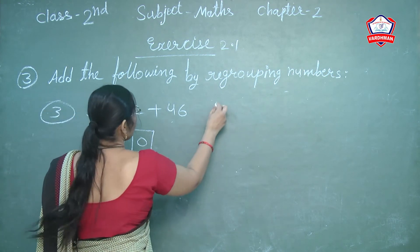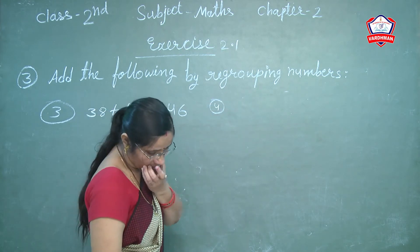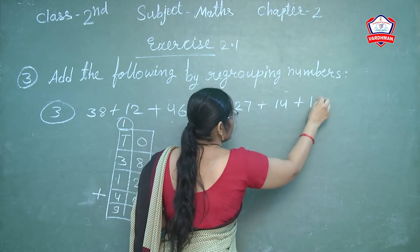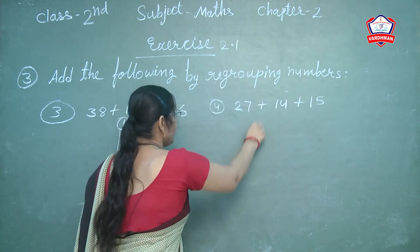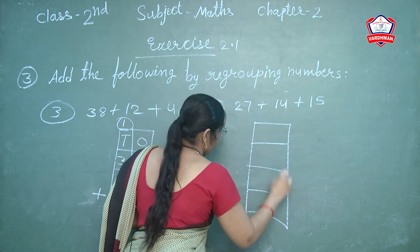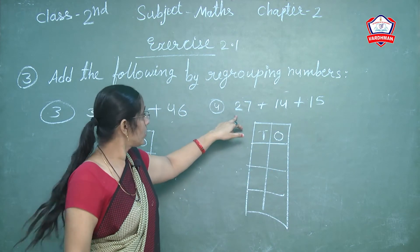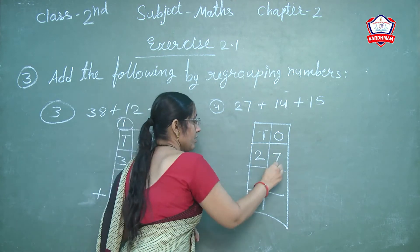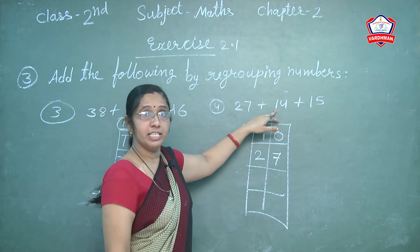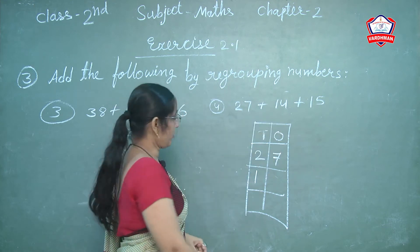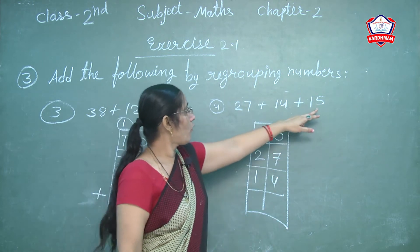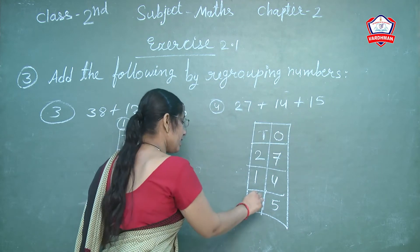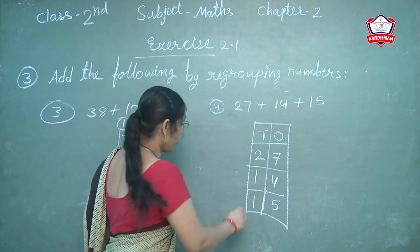Next, question number 4: 27 plus 14 plus 15. Write in tens and ones columns. 2 is tens — write in tens column. 7 is ones — write in ones column. 1 is tens — write in tens column. 4 is ones — write in ones column. 1 is tens — write in tens column. 5 is ones — write in ones column.